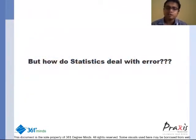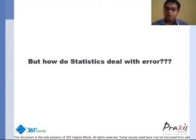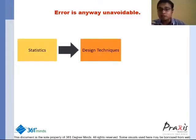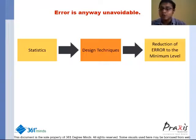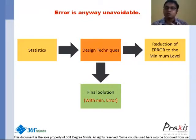We were talking about statistics as the subject that deals with error. The question normally arises: how does statistics deal with error? Error is anyway unavoidable — we cannot avoid error. Statistics is not a subject that will help you avoid it. How statistics will help you is that it will help you design techniques that reduce the error to the minimum level and come up with solutions associated with the minimum amount of error. So statistics is a subject that designs techniques to reduce the error level to the minimum.